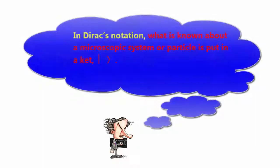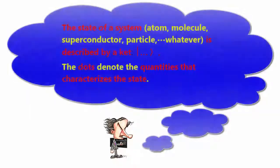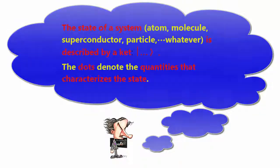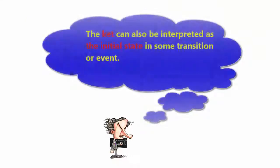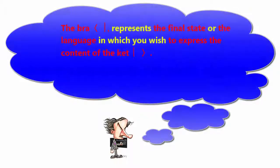In Dirac's notation, what is known about a microscopic system or particle is put in a ket. The state of a system — atom, molecule, superconductor, particle, whatever — is described by a ket. The dots denote the quantities that characterize the state. The ket can also be interpreted as the initial state in some transition or event. The bra represents the final state or the language in which you wish to express the content of the ket.